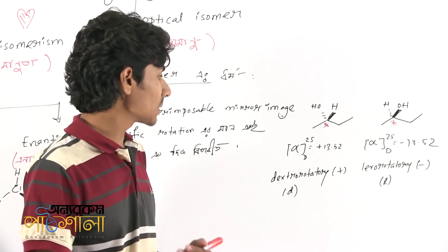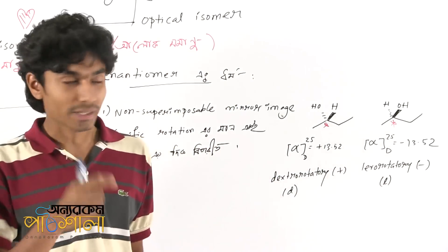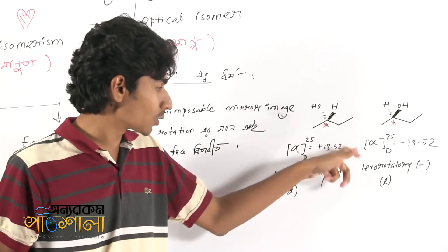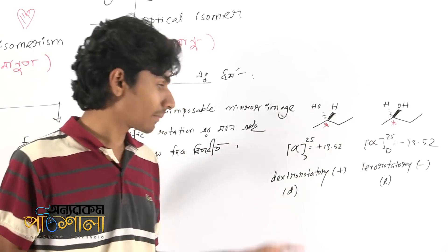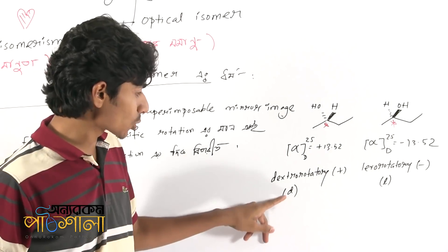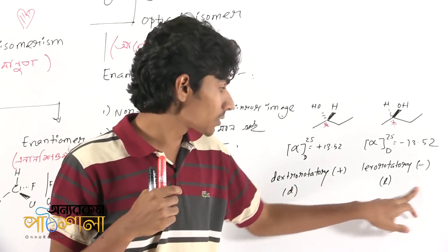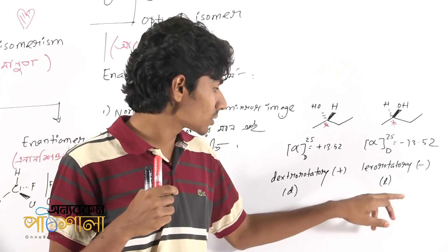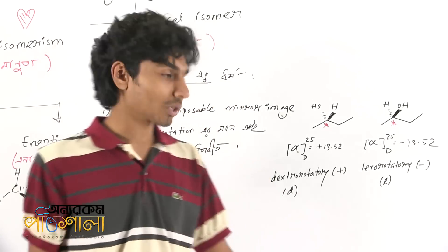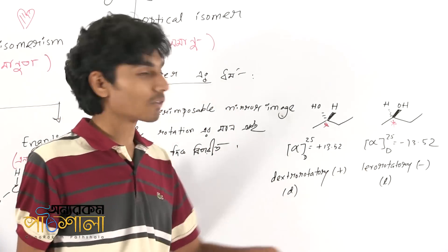What do we need to do in Z? This is the plus direction and minus direction. There are two terms: dextrorotation is plus and levorotation is minus. We add the letter D to minus, then we add the plus sign. Then we add levorotation in L.